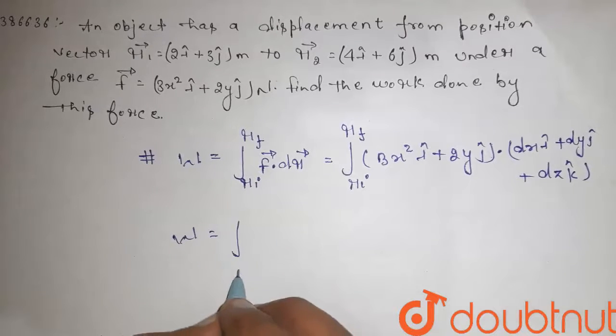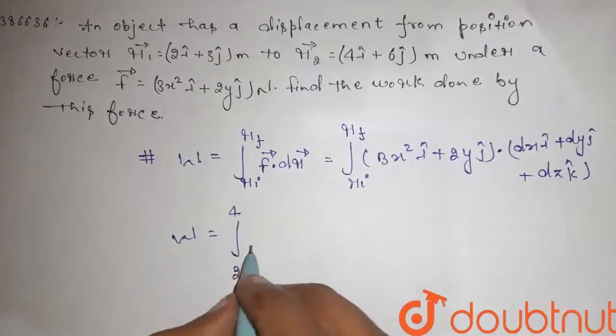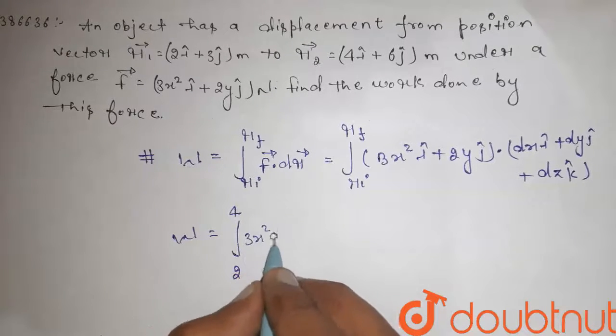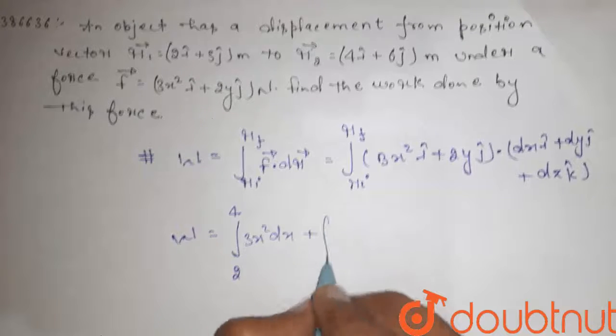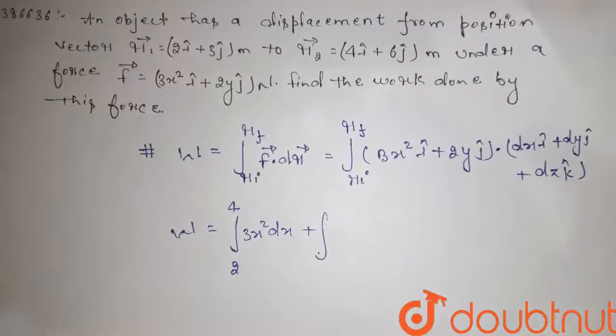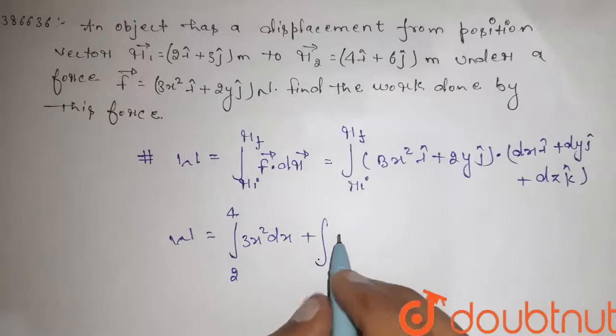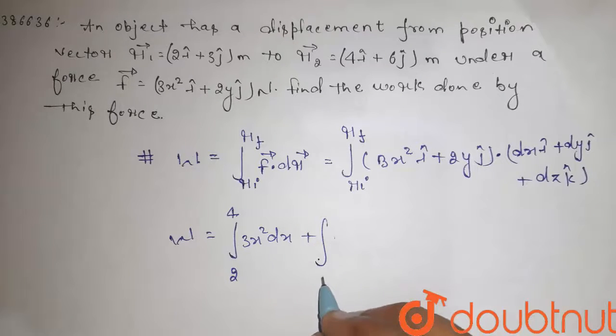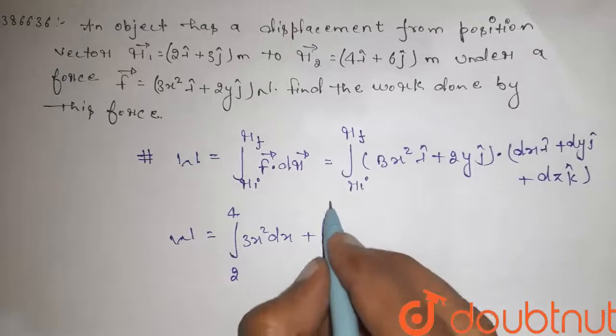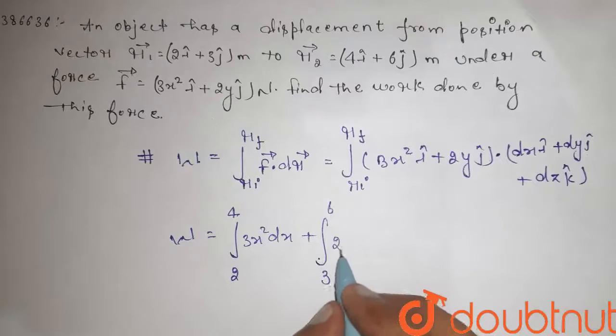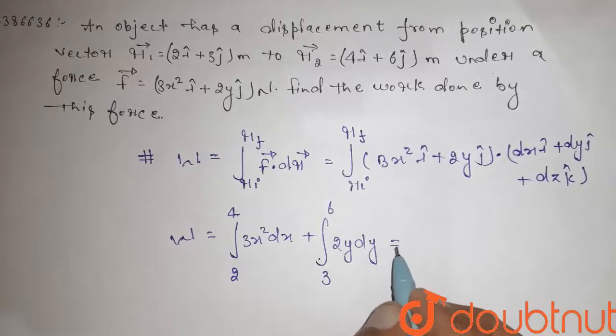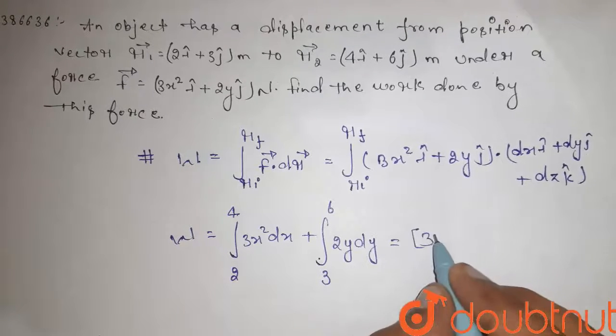...is integral from 2 to 4 of 3x² dx plus integral from 3 to 6 of 2y dy, which equals x³ evaluated from 2 to 4 plus y² evaluated from 3 to 6.